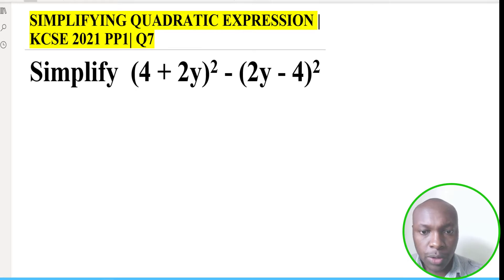Simplify (4 + 2y)² - (2y - 4)² so that is the quadratic expression.